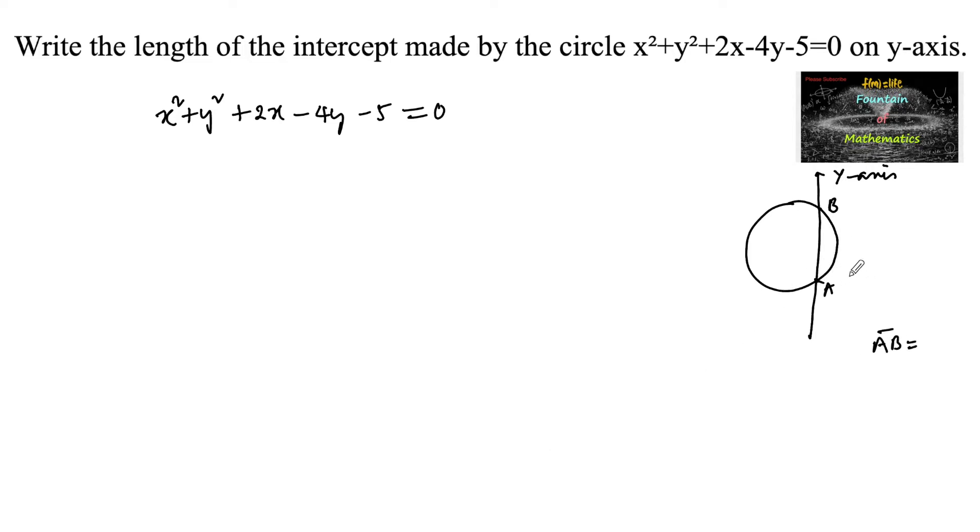If the coordinates are on the y-axis, let us consider (0, y₁) and (0, y₂). So the length of AB can be taken as |y₁ - y₂|. This is the intercept.